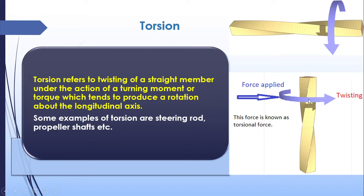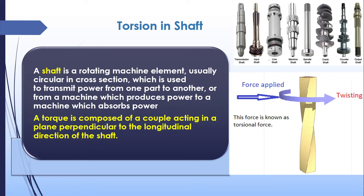That particular twisting force is known as torsion, and it tends to produce rotation in the body. A shaft is a machine element you may have seen in pumps, machines, and engines. A shaft is a body or machine element which transfers motion or power from one point to the other point.